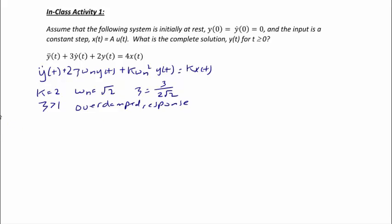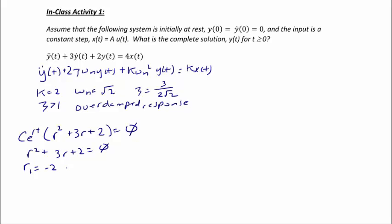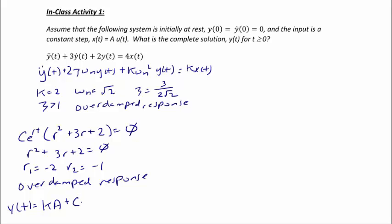Another way to confirm the overdamped response is to find the roots of the characteristic polynomial: r squared plus 3r plus 2 equals zero. Solving gives r1 equals negative 2 and r2 equals negative 1. Having two distinct real roots confirms an overdamped response. From the table, the form of the solution for overdamped is y of t equals ka plus c1 e to the r1 t plus c2 e to the r2 t.